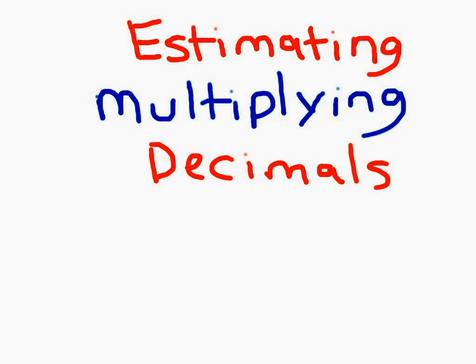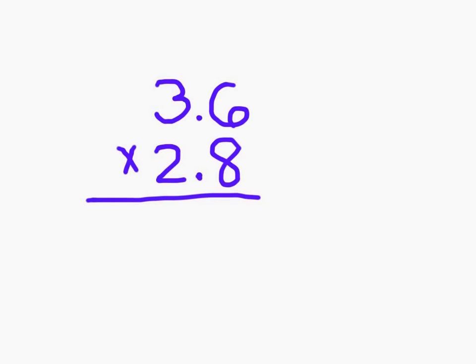Let's look at estimating products when we are multiplying decimals. When we're asked to multiply 3.6 or 3 and 6 tenths and 2 and 8 tenths, we could have an exact answer.